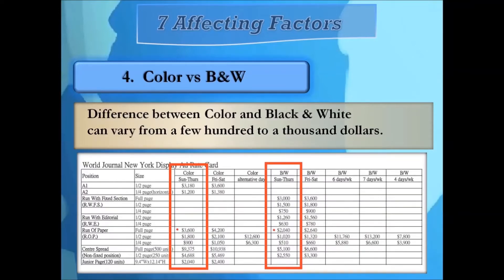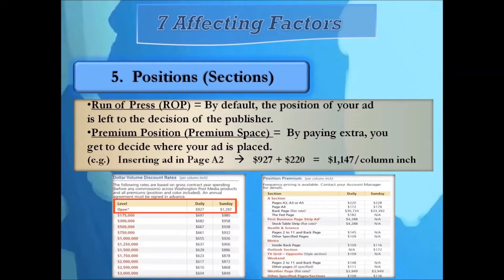Color versus black and white: the World Journal is a large Chinese newspaper publisher in cities like LA, San Francisco, and New York. In this example, we can see that the price difference between color and black and white can be very drastic — ranging from a few hundred dollars to a thousand dollars.